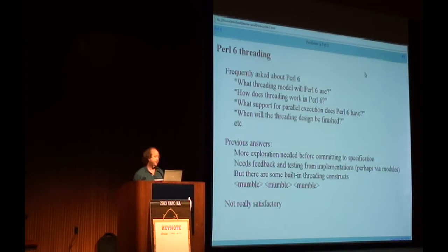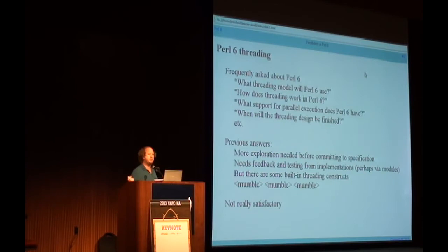...one of the most frequently asked questions I get — besides 'when will 1.0 be released' — is about parallelism in Perl 6: what threading model will Perl 6 use? And I don't know anything about threading models, so I say there will be one. And how does it work in Perl 6? I'd like to be able to say, read the synopses, but they're kind of slushy — and I'll explain what that means in a bit.